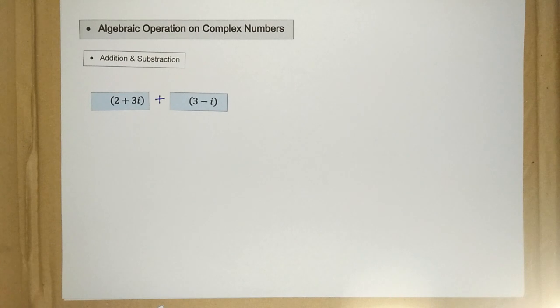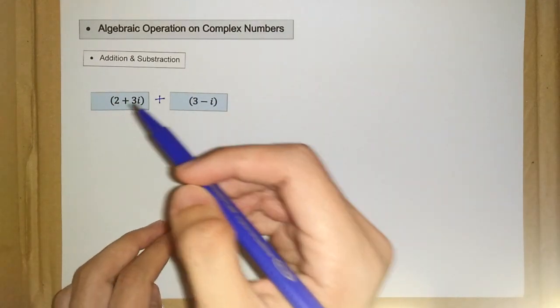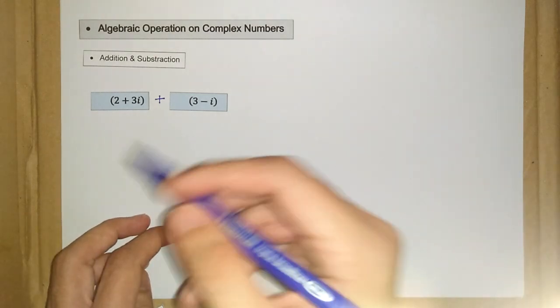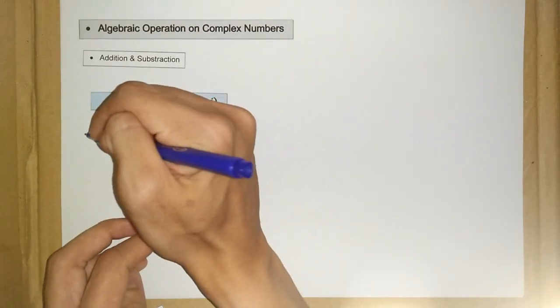So what we do here for addition and subtraction is we just add the real part and the imaginary part respectively. What I mean by that is just like this.